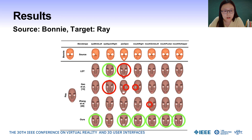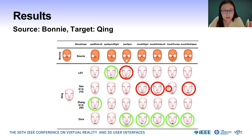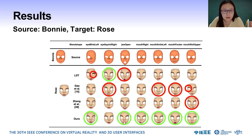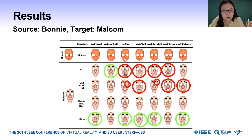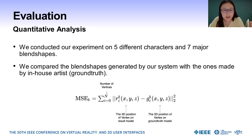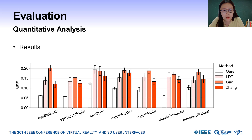The results for other avatars are quite similar. This is the result for Ray, this is the result for Qin, this is the result for Rose, and this is the result for Michael. To quantitatively estimate the distance between the results and the ground truth created by an in-house artist, we calculated the mean square error between the result and the ground truth. Our method achieved the lowest error score. We also conducted a user study to demonstrate the effectiveness of our method.